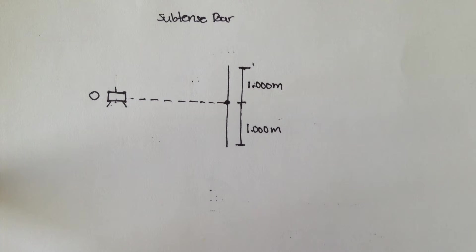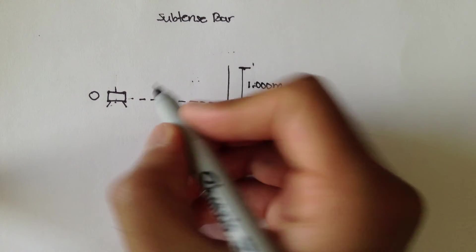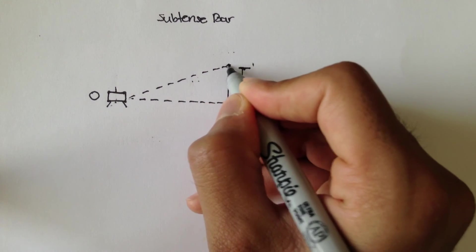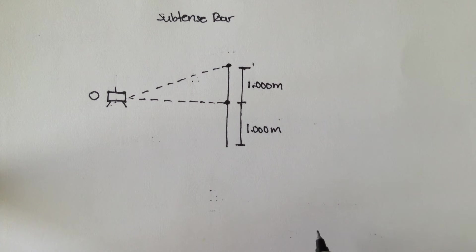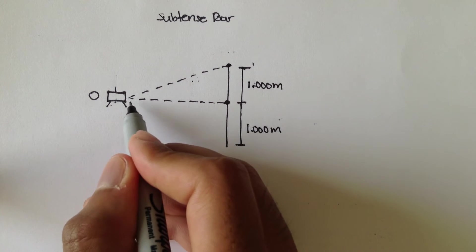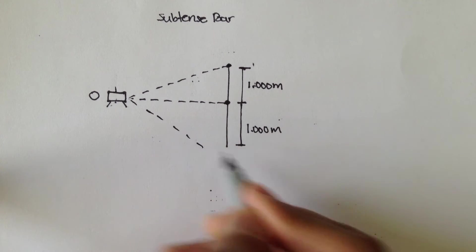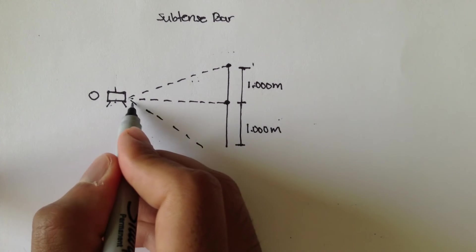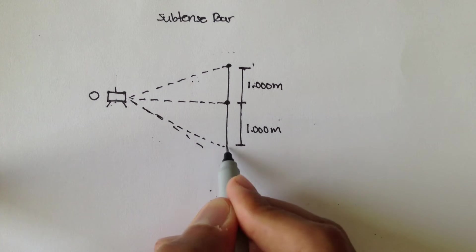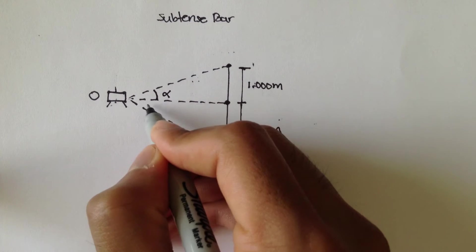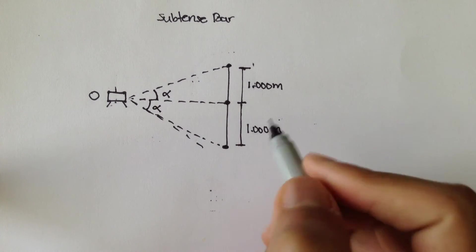And what this instrument is going to do is that it's going to turn, it's going to turn counterclockwise first, so that way, and measure to this point, to the end of the subtense bar. Did I say that out counterclockwise? Yes. And then it's going to go clockwise, and it's going to measure out this point. And these two angles should be about the same.